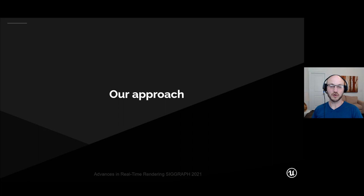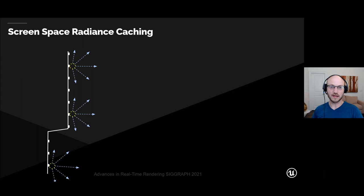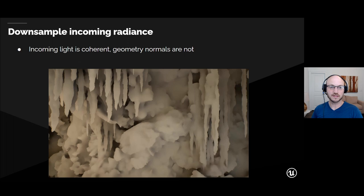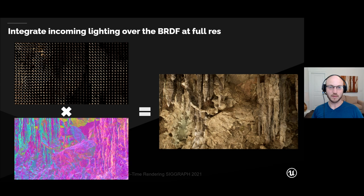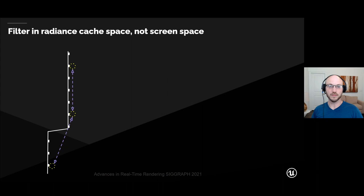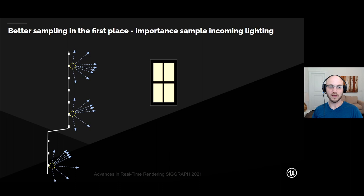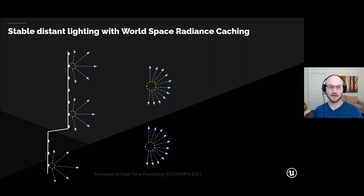Our approach is different. Instead of tracing from every single pixel on the screen, we bundle up our rays and trace from a much smaller set of pixels — this is effectively screen-space radiance caching. This down-samples the incoming radiance, which works well because the incoming radiance is coherent even though geometry normals are not. We still integrate with the BRDF at full resolution to get full resolution direct lighting quality. We also filter between the probes of our radiance cache instead of in screen space, use better importance sampling, and solve distant lighting separately through the world-space radiance cache for stable distant lighting.